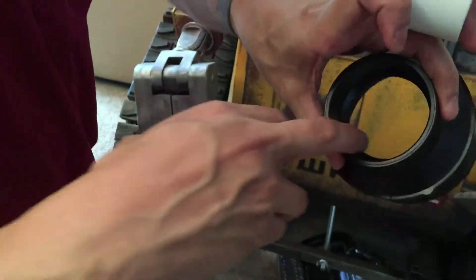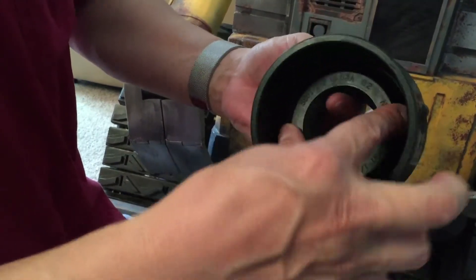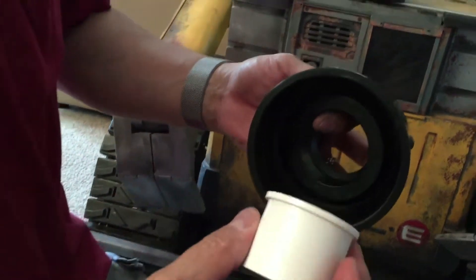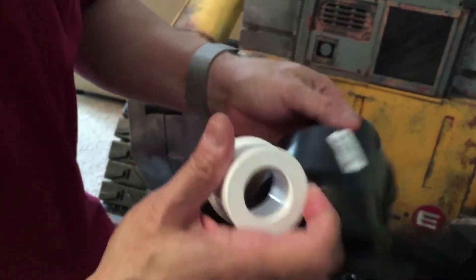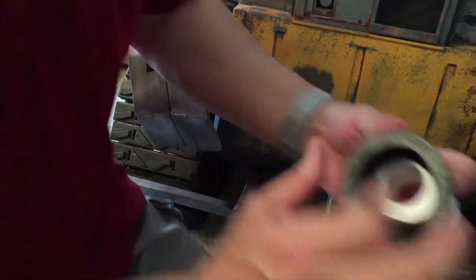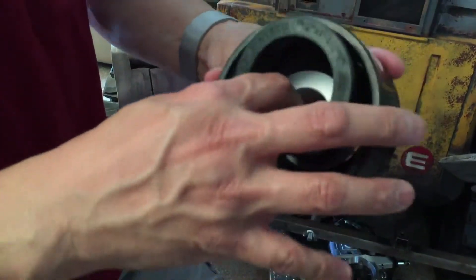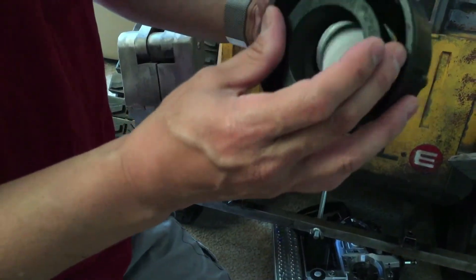Once you get rid of this little lip here, this will push through on this way. Once you get rid of this lip here, this will be able to press through the back, and you're trying to assemble it like that.